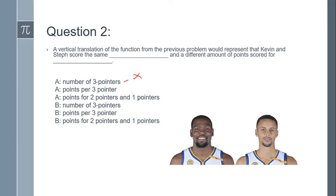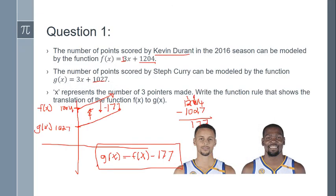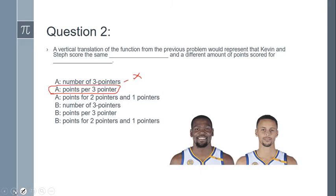Do they score the same points per three-pointer? Well, yeah. That's what they do. They had the same slope. Remember our equations from the previous problem? They had the same slope, the three here. That's what they have the same of. And that, in this case, represents points per three-pointer, which is obviously clearly three. So they score the same points per three-pointer. Sure they do.